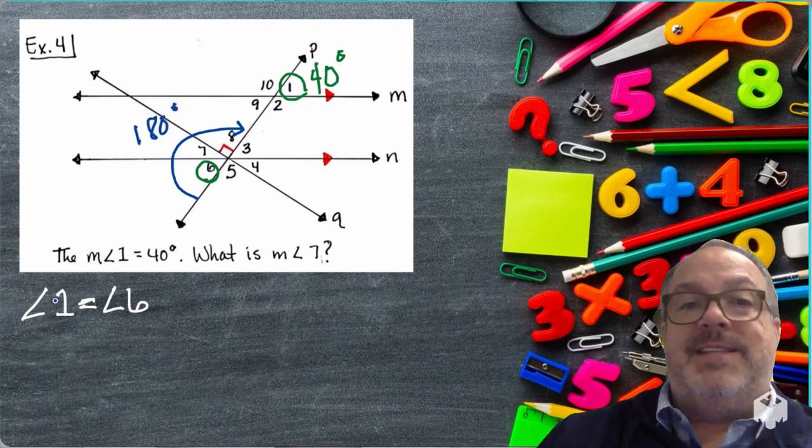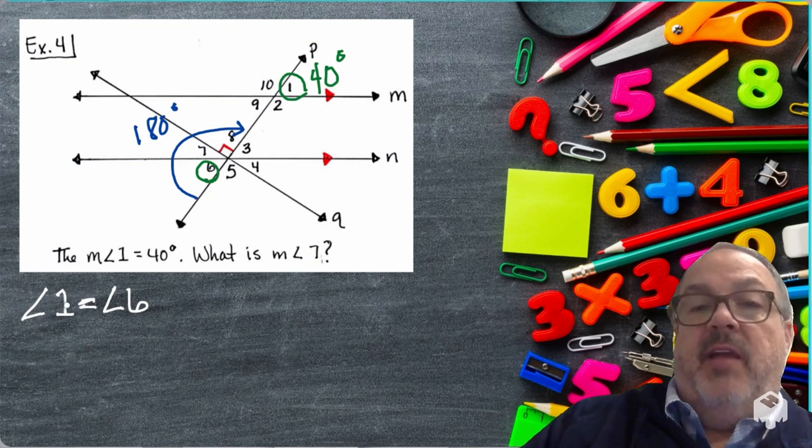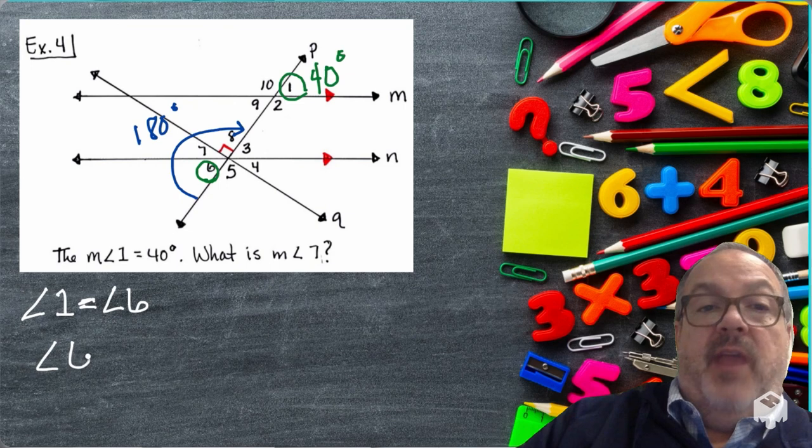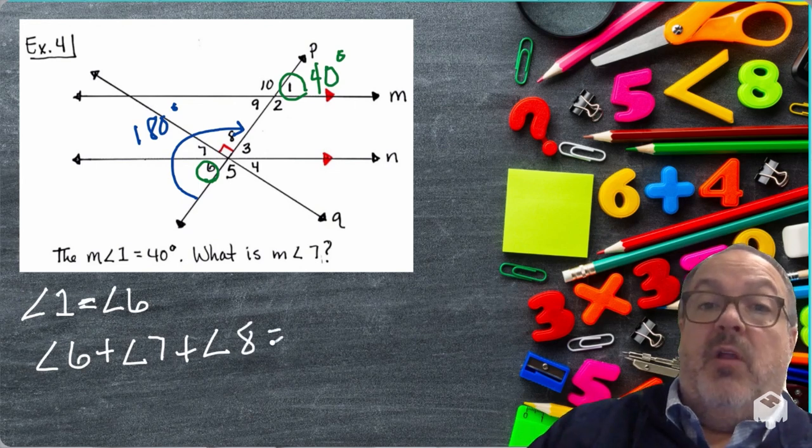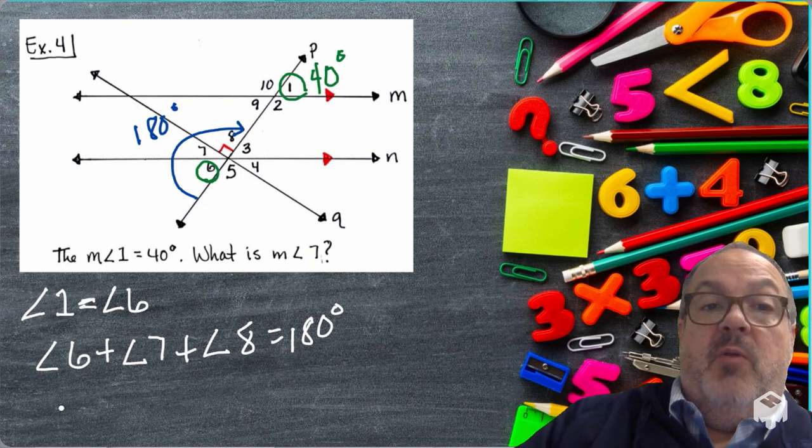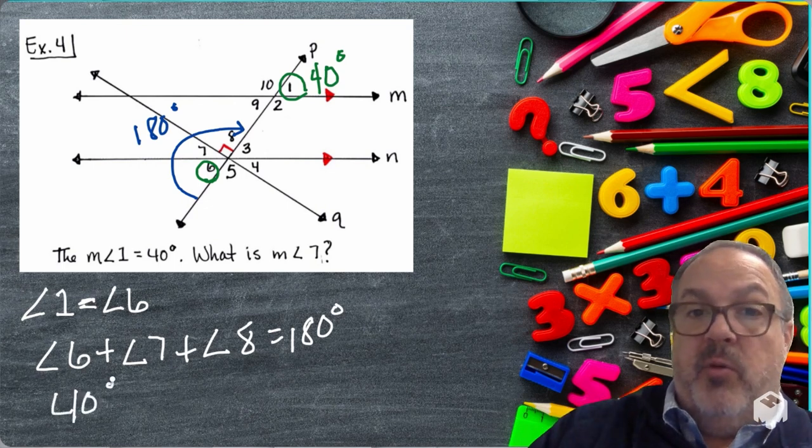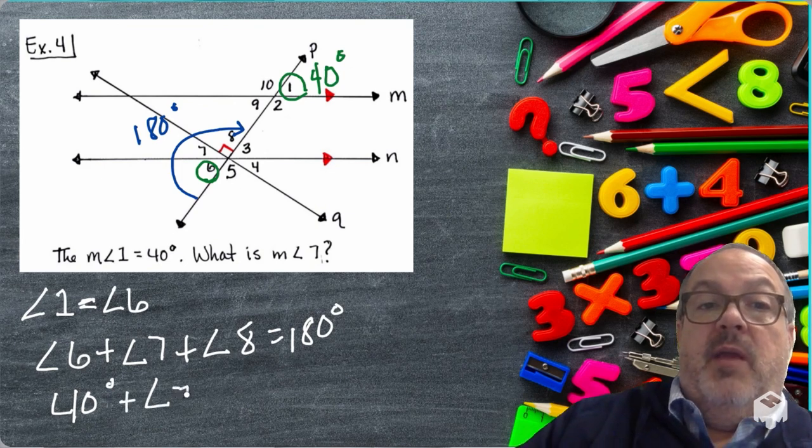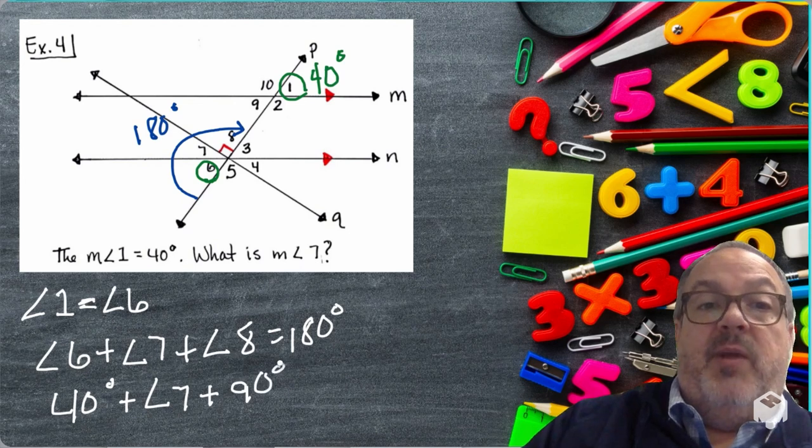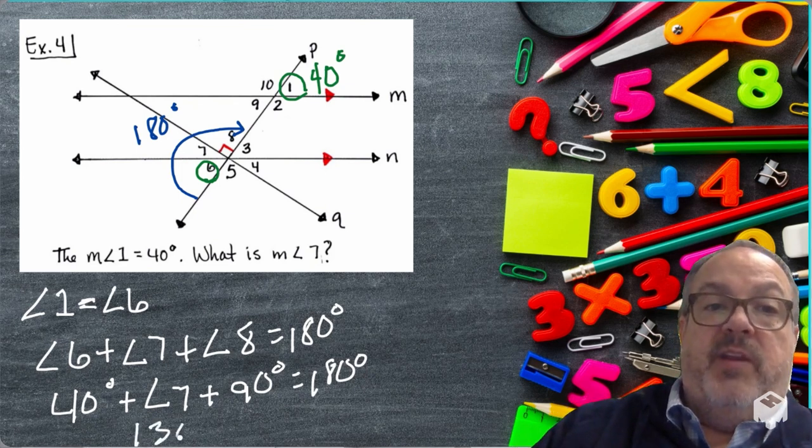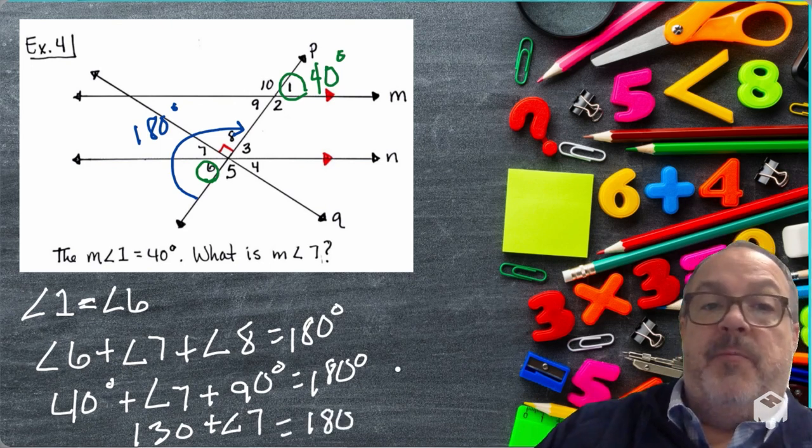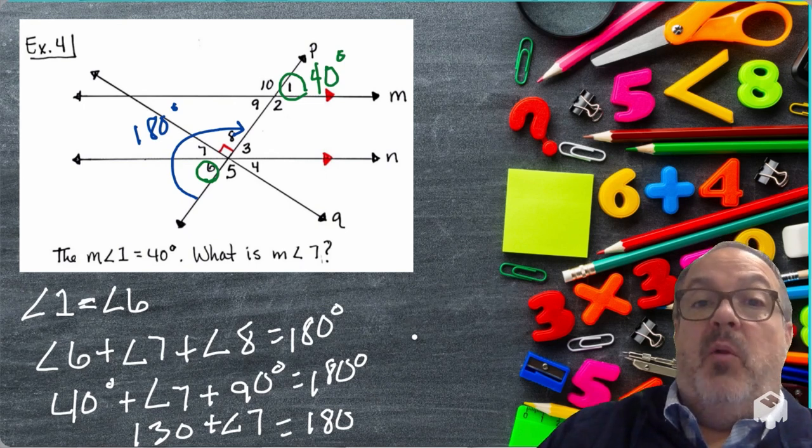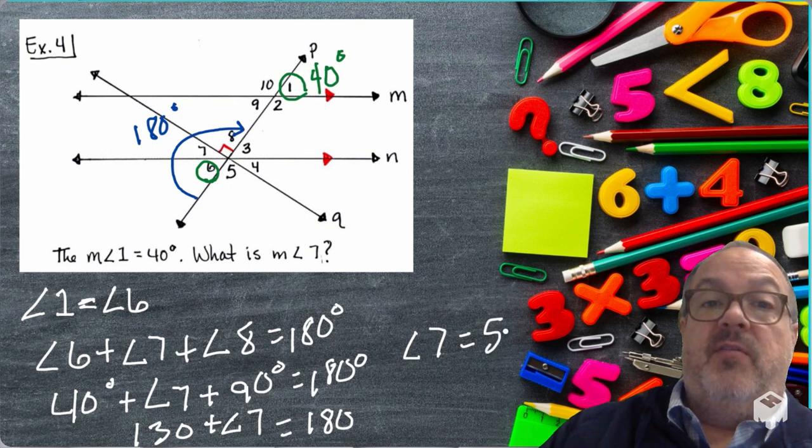So what we're going to do is take that information and figure out the missing angle, which is Angle 7. We have Angle 6 plus Angle 7 plus Angle 8. Those are going to equal 180 degrees. We know that Angle 6 is 40 degrees. We still don't know the measurement for Angle 7. And we do know that the measurement of Angle 8 is 90 degrees because we have that symbol. If we combine the known angles, 40 degrees and 90 degrees, we have 130 degrees. Then we're going to add Angle 7 to that to get 180 degrees. So if I subtract 130 on both sides of the equation, I'm going to have Angle 7 equals 50 degrees.